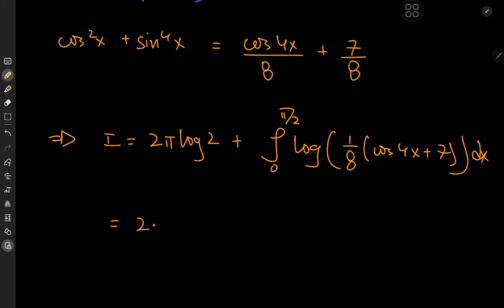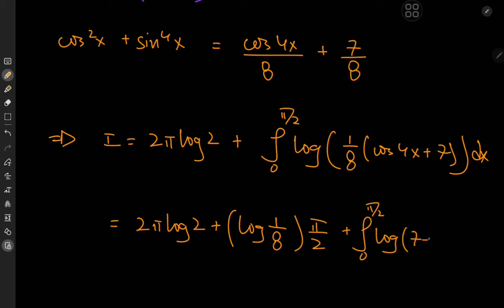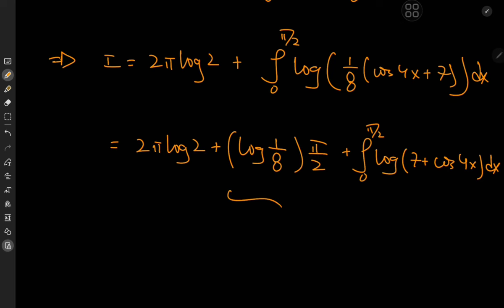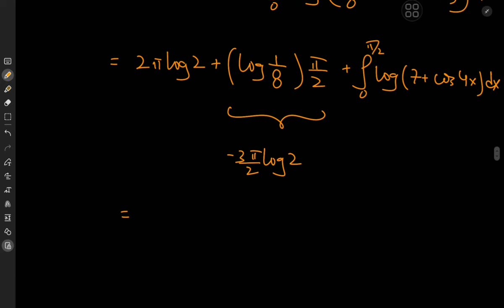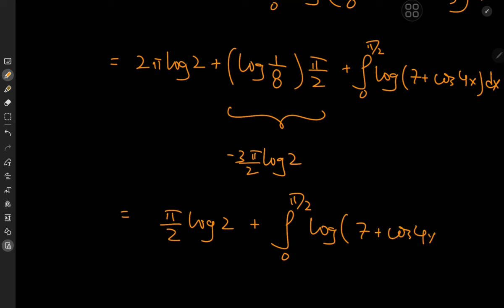Now log(1/8) can be written as negative 3 log 2, so we have negative 3π/2 times log 2. Combined with the 2π log 2 term we already had, 2 minus 1.5 gives 0.5, so we have π/2 times log 2 plus the integral from 0 to π/2 of the logarithm of 7 plus cos(4x) dx.